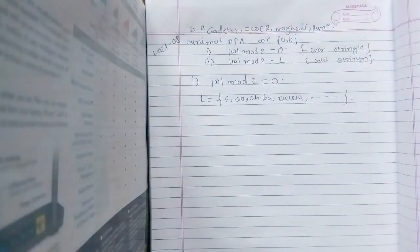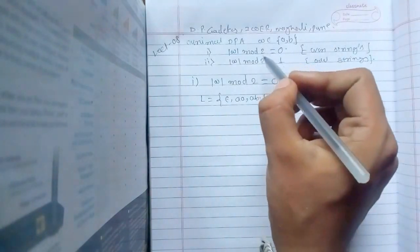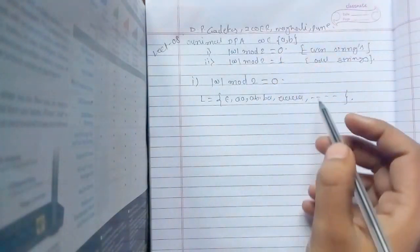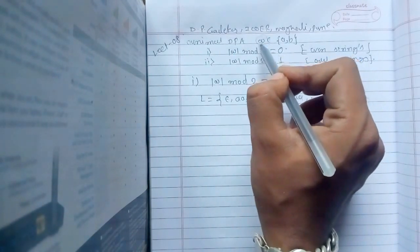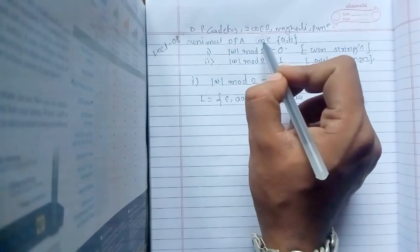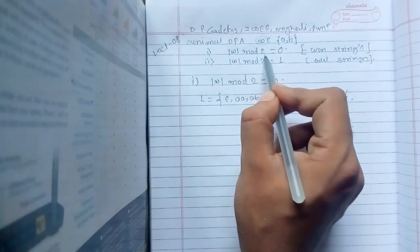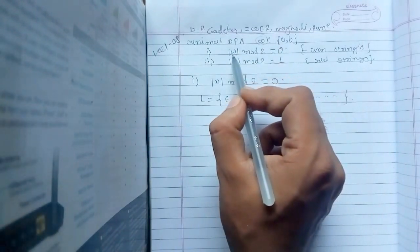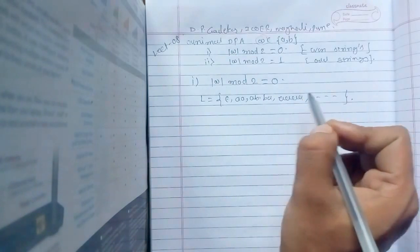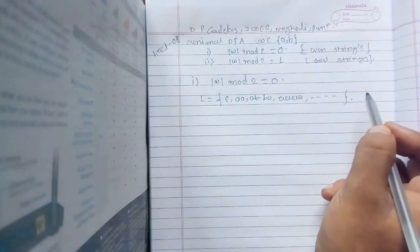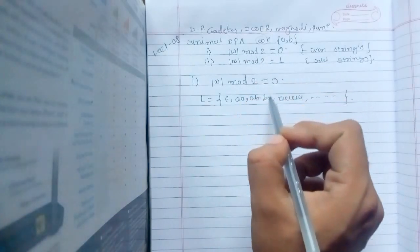This is lecture number 8. Here we'll see another type of example for DFA or finite automata. The set of all strings w belongs to inputs a and b. Any string which belongs to {a, b}, if its length is mod 2 and the remainder should be 0, means strings of length 0, 2, 4, 6, 8 — that time only you will get remainder 0.